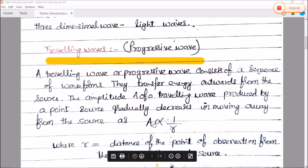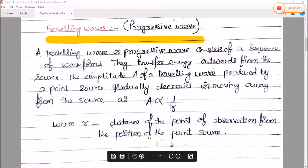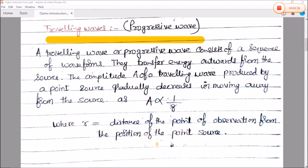That means amplitude is inversely proportional to distance. The distance of the point observation from the source increases, the amplitude will decrease. If the distance is small, it will have maximum amplitude. It is inversely proportional.